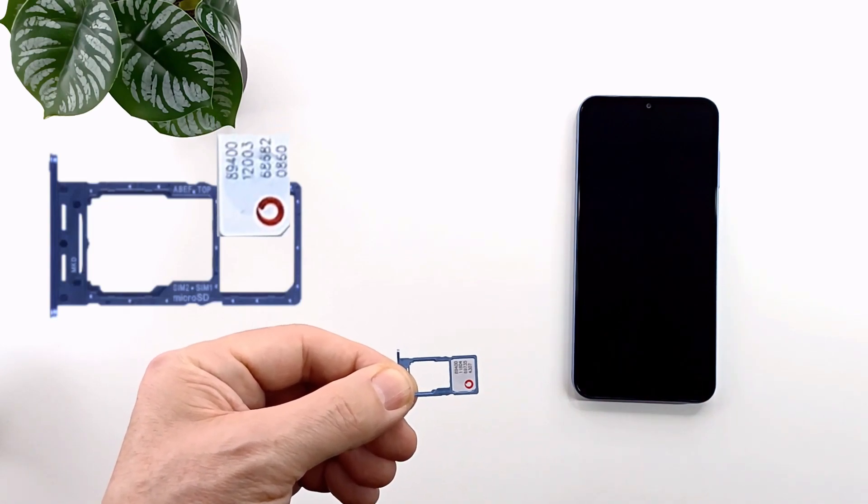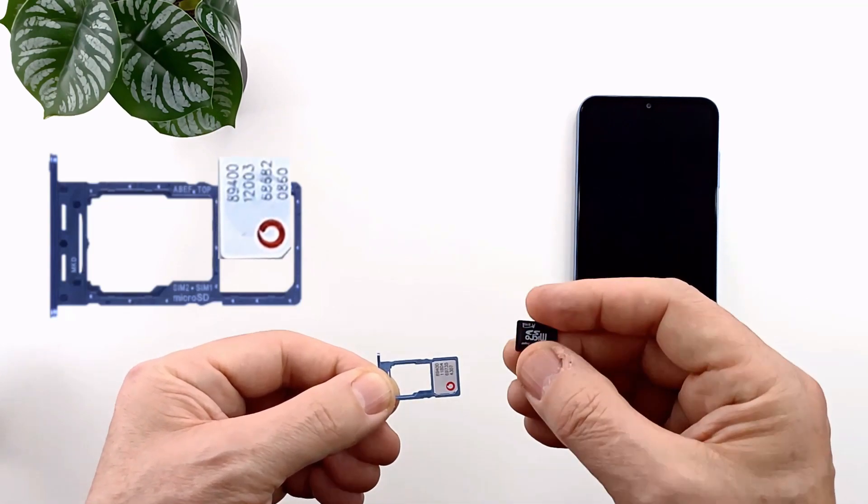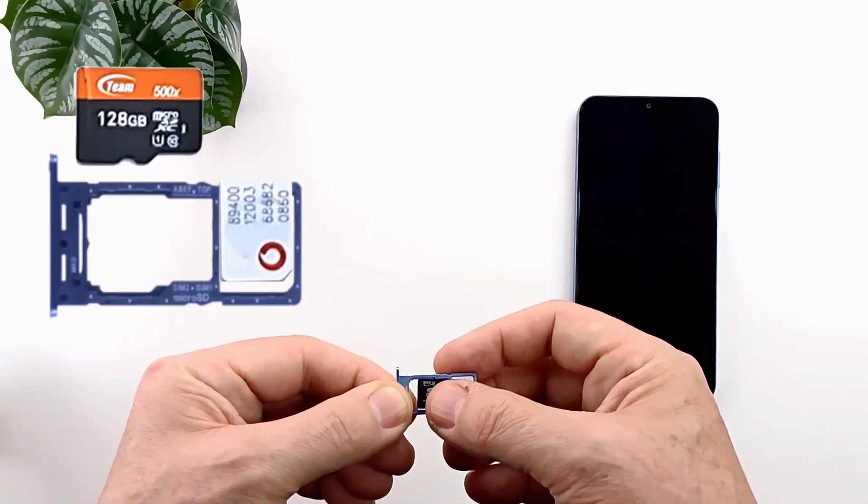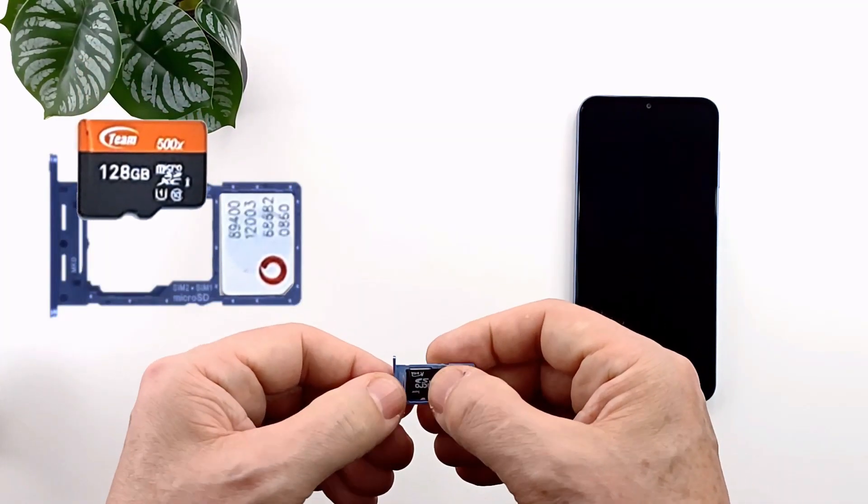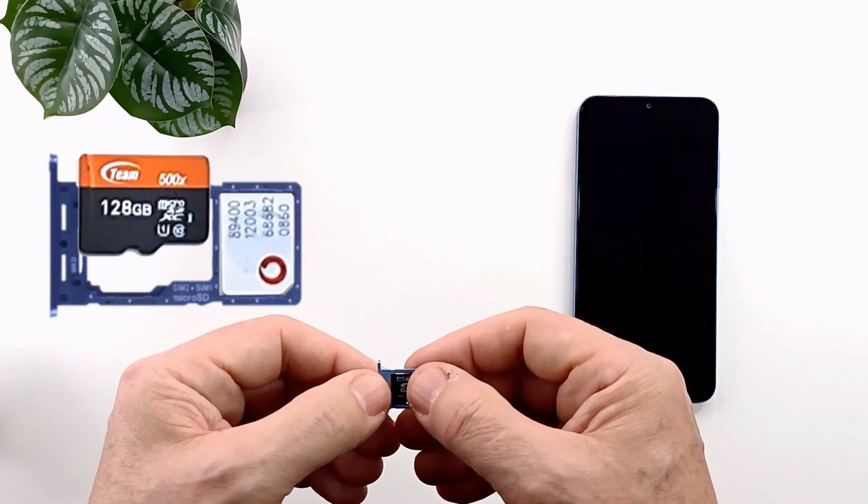The SIM cards are nano SIM and are inserted in the SIM tray with the gold contacts facing down. The memory card is an SD card, up to 1TB capacity.